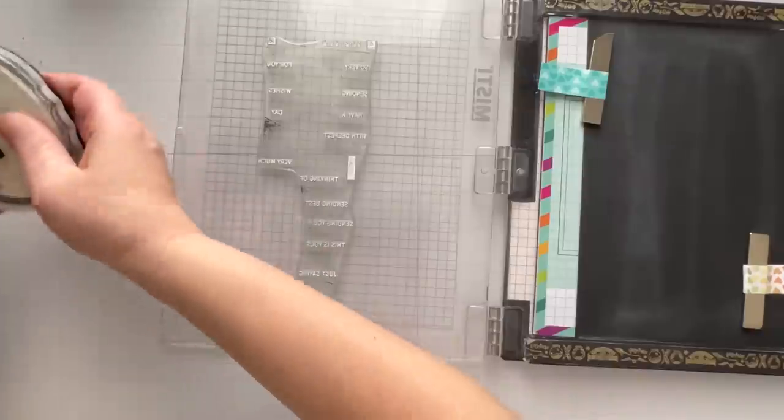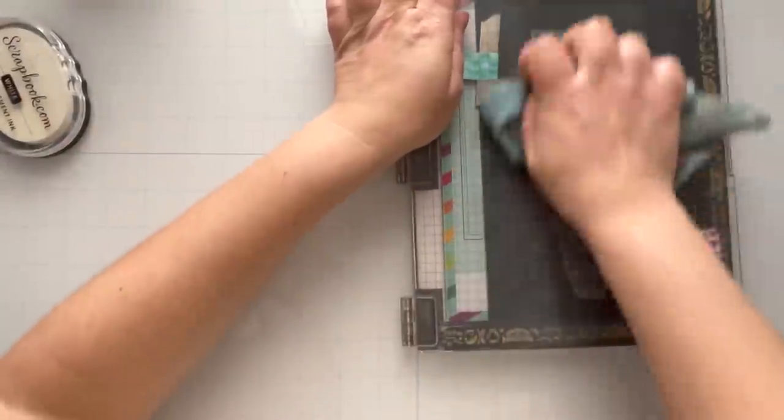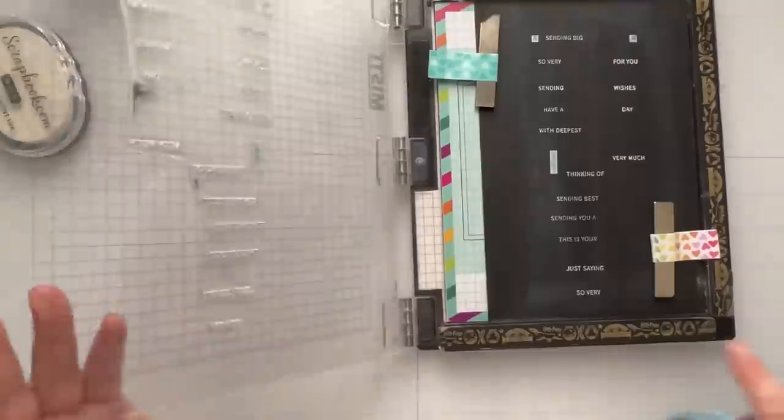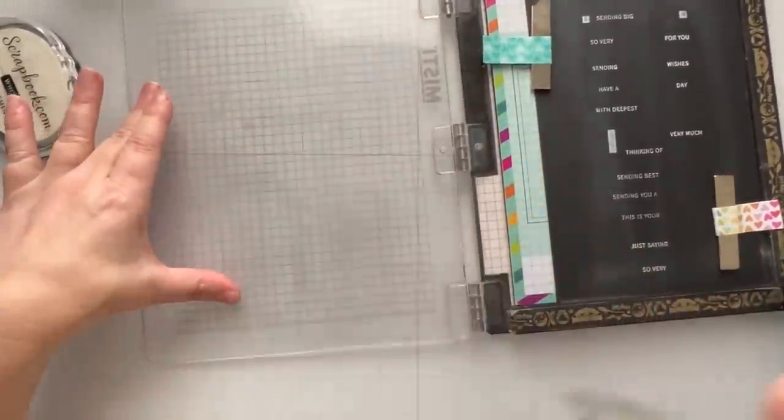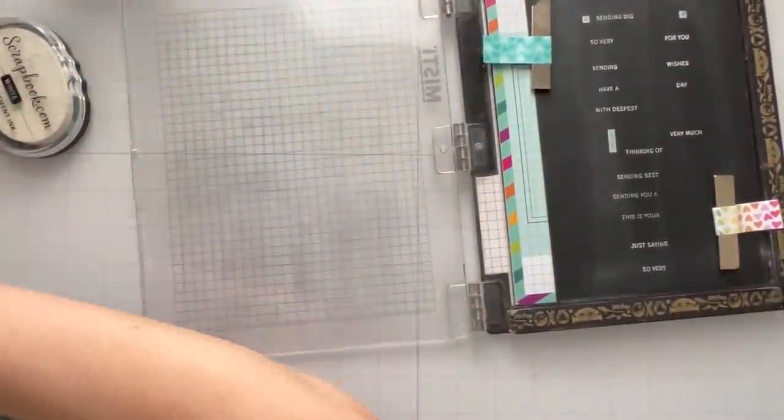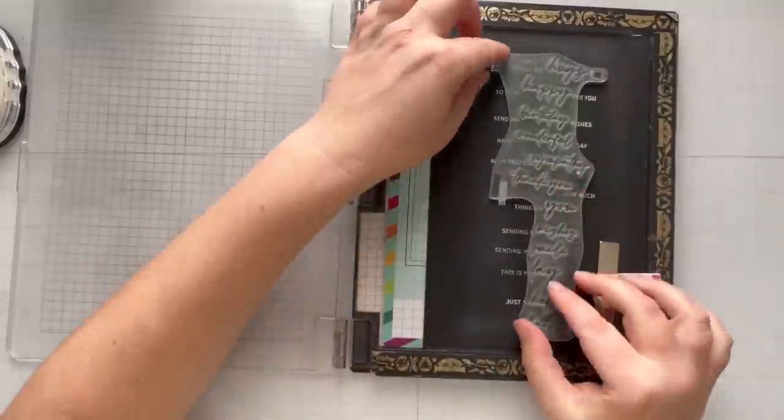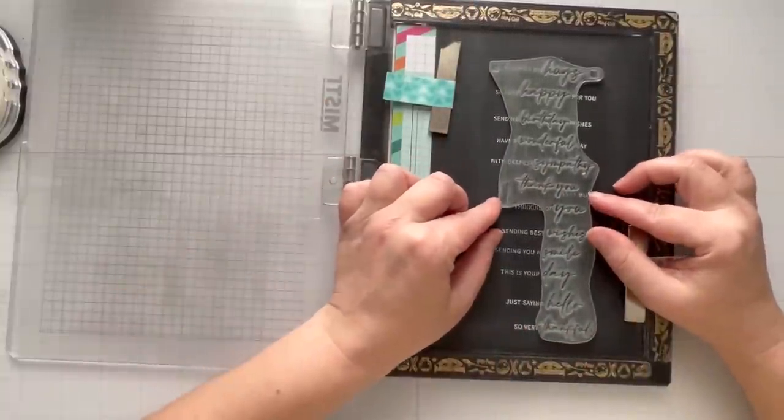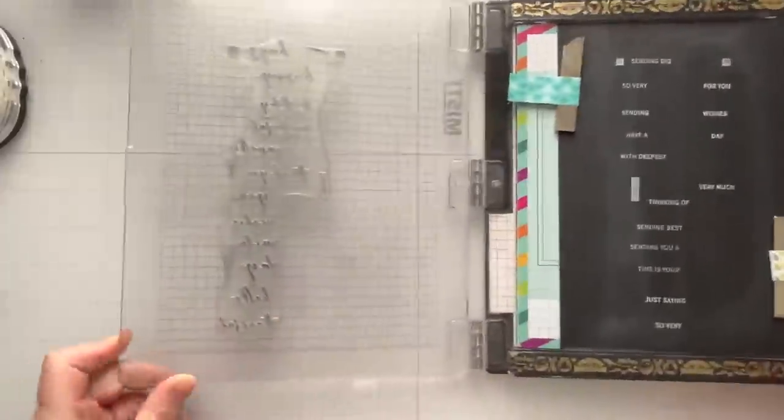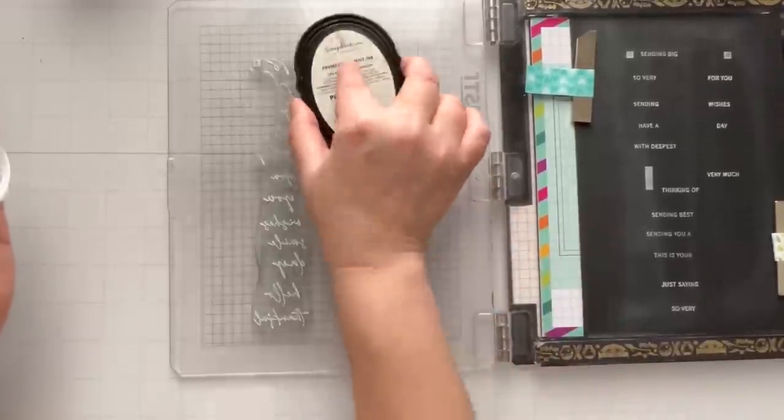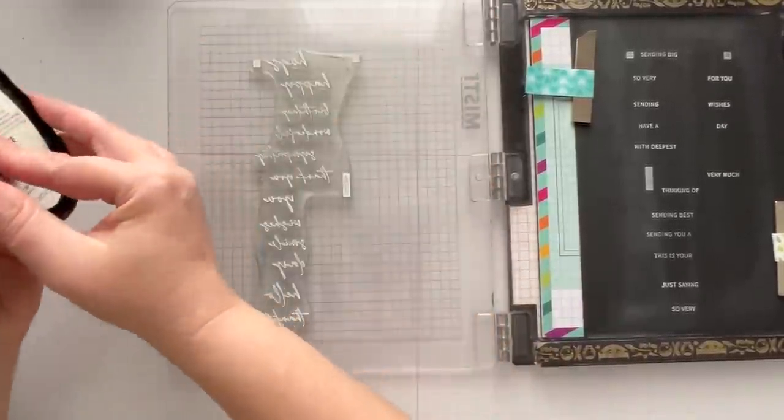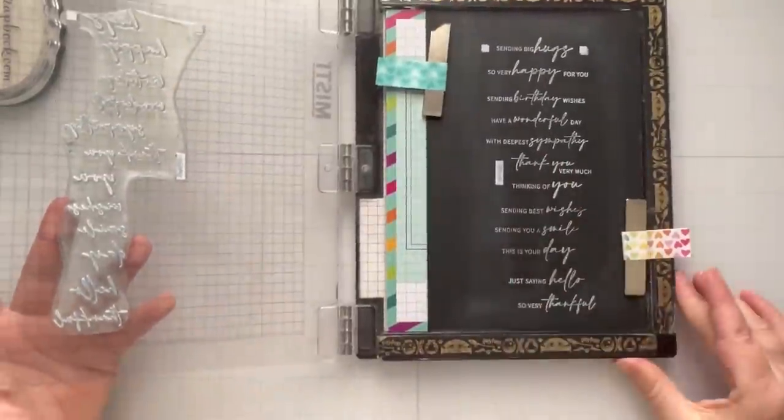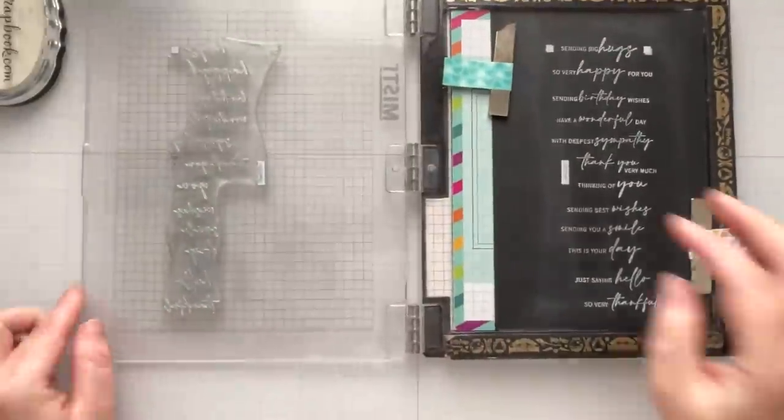So I'll go ahead and ink the first part. This is actually a two-step sentiment. So part of the sentiment is in print font and the other part of the sentiment is in a scripty font, which makes this quite unique. So then I'll use the second stamp and line it up. There's like a big rectangle and squares at the top and you just line those up. And so that's why I said you don't have to use a stamp positioner if you don't have one. And then I'll go ahead and ink up the second part of the stamp.